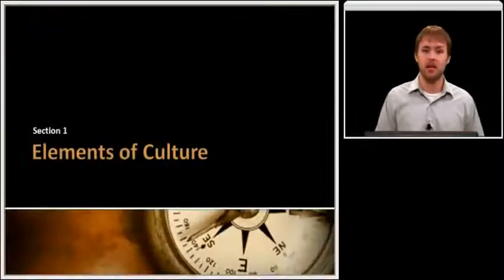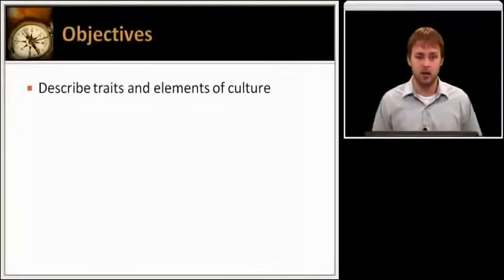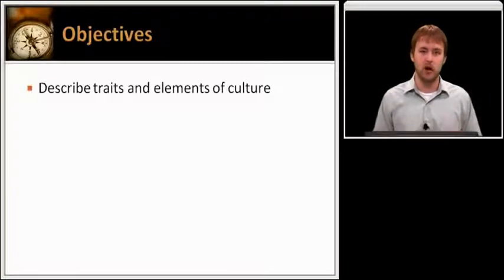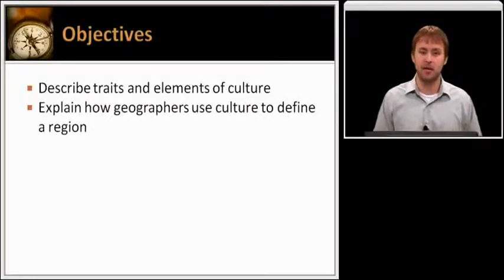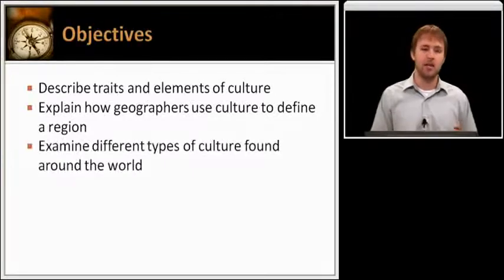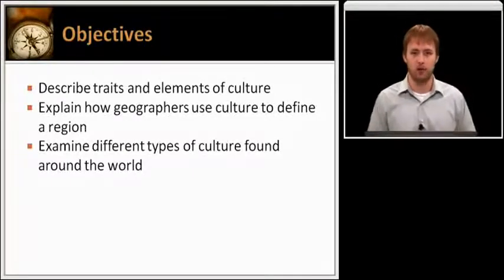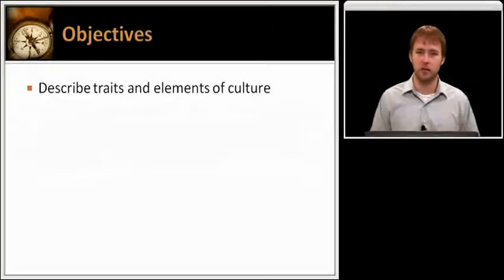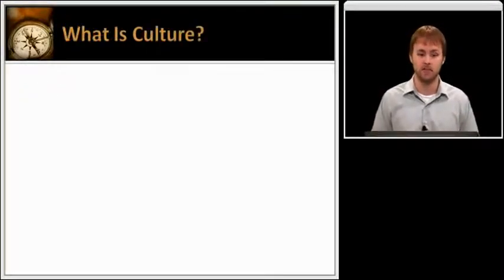We're going to begin section one of this lesson by addressing our objectives. First, we need to describe traits and elements of culture. Then explain how geographers use culture to define a region. And finally, examine different types of culture found around the world. In this section, we're going to focus on the first objective only: to describe traits and elements of culture.